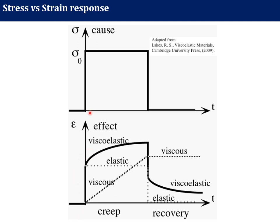For viscoelastic materials, if we apply stress there will be an instantaneous strain — this portion is due to the elastic portion of that material. If we keep the stress constant, the strain will keep growing — this is due to the viscous portion. If we remove the stress, there will be an immediate recovery, called instantaneous recovery. Then stress becomes zero, but there will still be some strain which recovers with the passage of time. There will also be some permanent deformation. This is typical viscoelastic behaviour under constant stress.